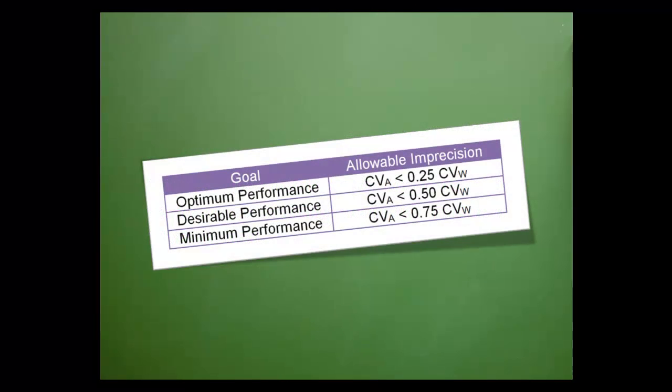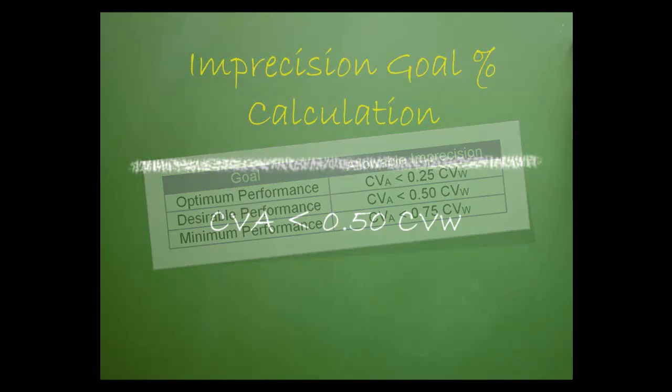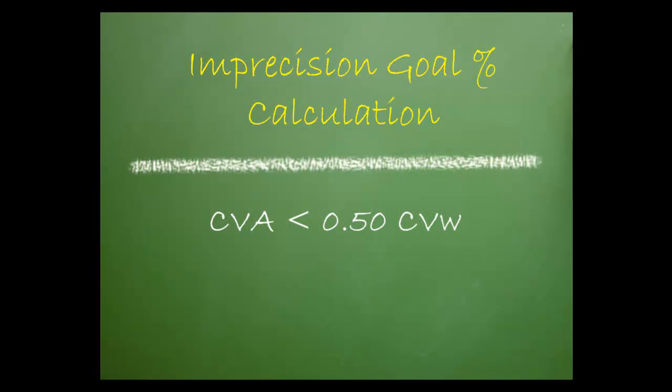Using the formula suggested by Dr. Frazier, allowable imprecision is calculated where CVA represents total allowable imprecision and CVW represents within subject biological variation as published. If we were to choose a performance goal for imprecision of desirable and the published CVW is 5.7%, then the CVA would be 2.85%.